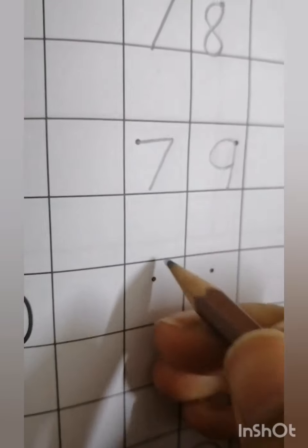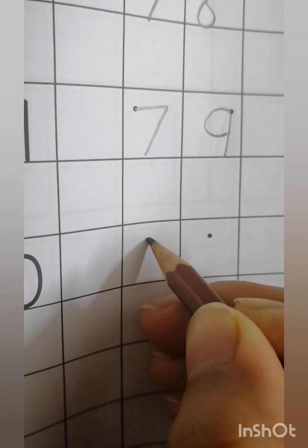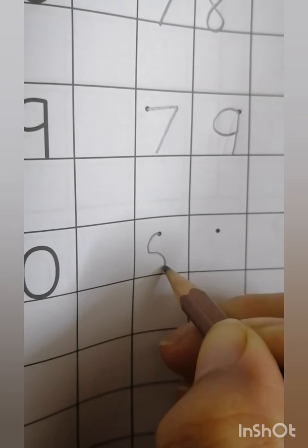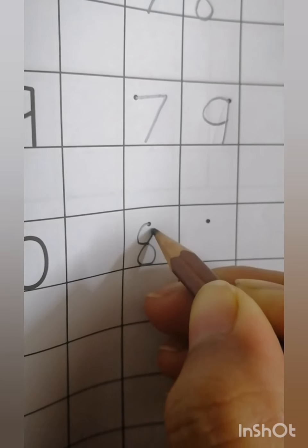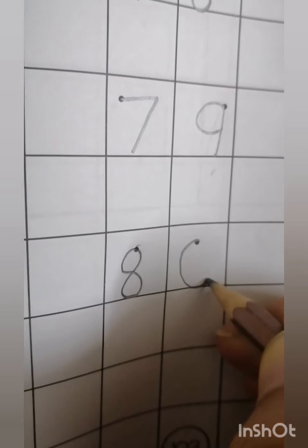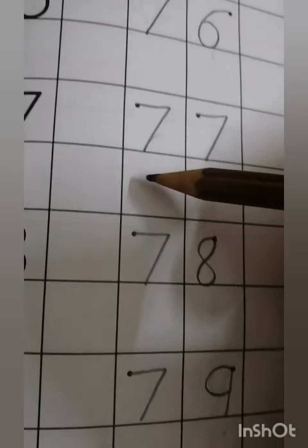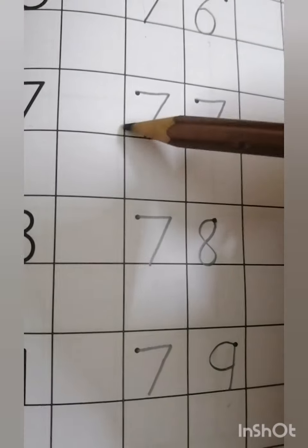7 and 9 makes 79. And after the 7, what comes? After the 7, 8, right? 8. And after 9, 0. 8 and 0 makes 80. Once again, start reading. 7 and 6 makes 76. 7 and 7 makes 77.